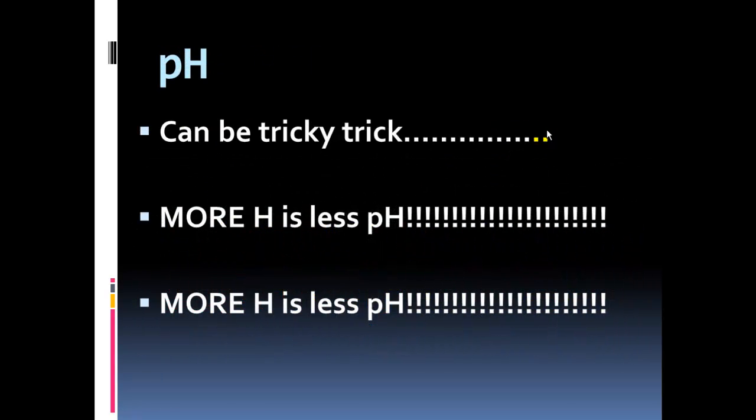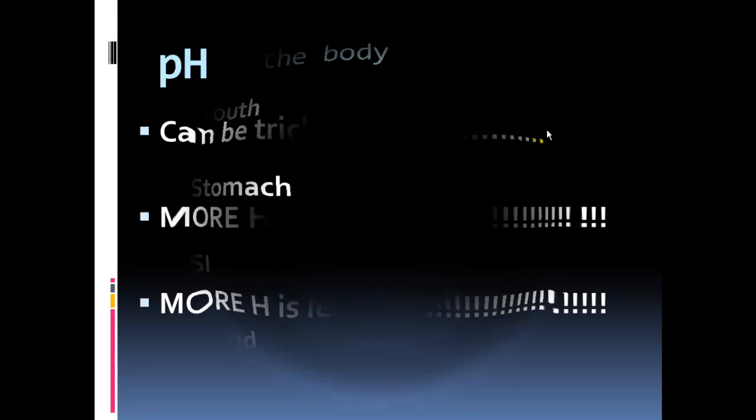So, pH again, honest to goodness, it is one of the trickiest trick little things, and it gets people all the time. So chanting, saying, writing it down, more H equals less pH. More H, so the more hydrogen ions are free in a system, the lower the pH level, the more acidic it becomes.